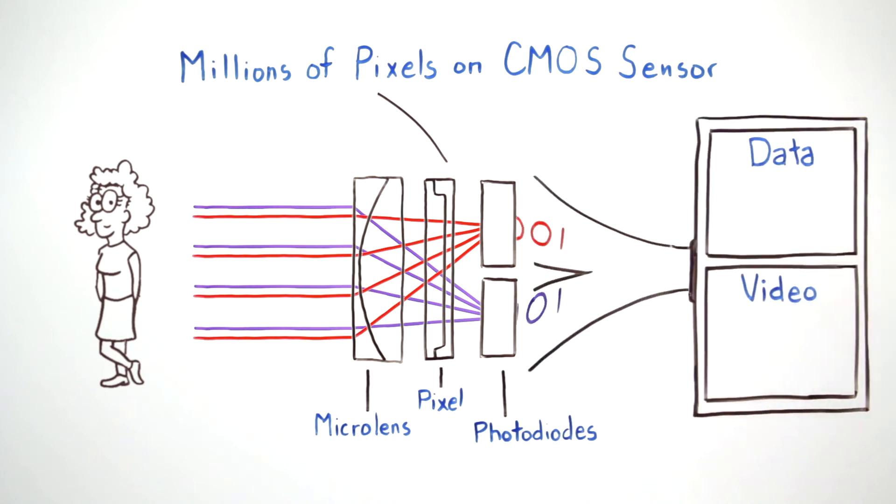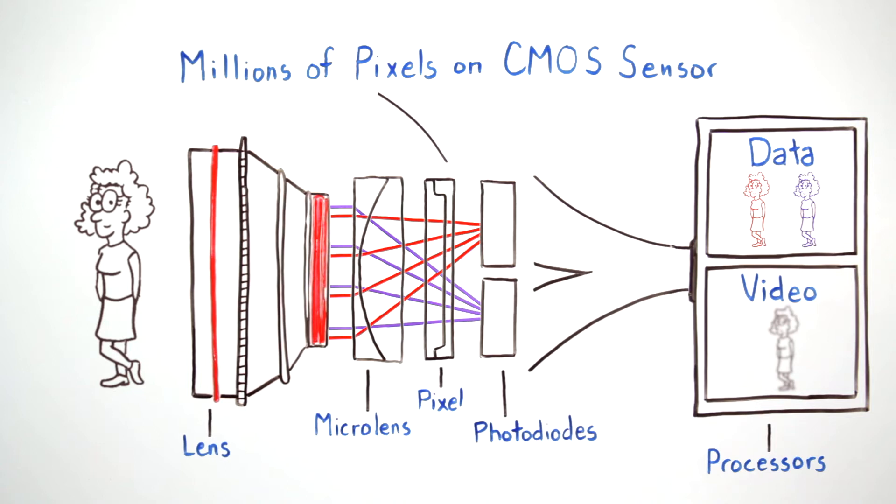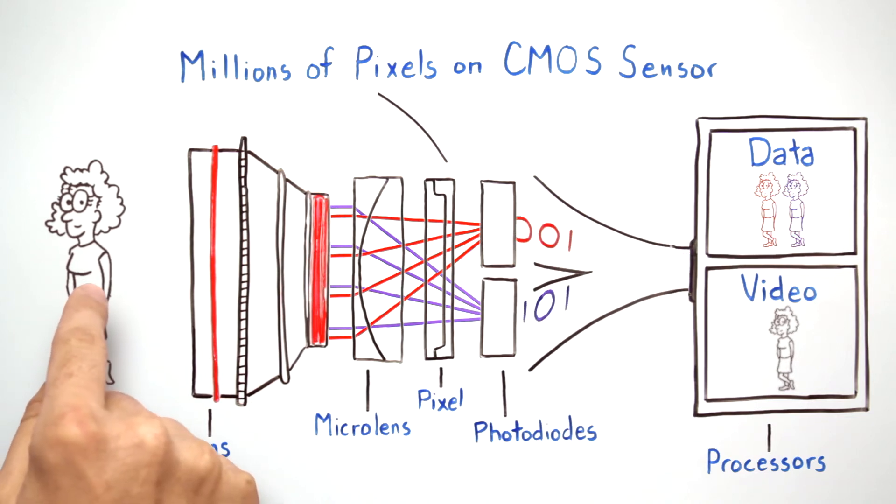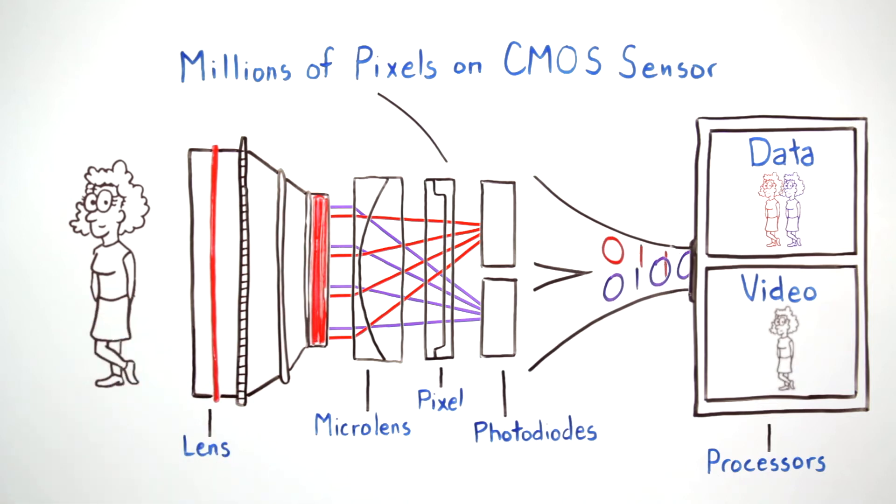From there, two separate video images are passed to a data processor, where the phase difference between the two is analyzed, and a control signal is generated to drive the lens in the correct direction for sharpest focus. With this real-time processing and feedback loop, the camera quickly finds sharp focus and continuously maintains it as the selected subject moves within the scene.